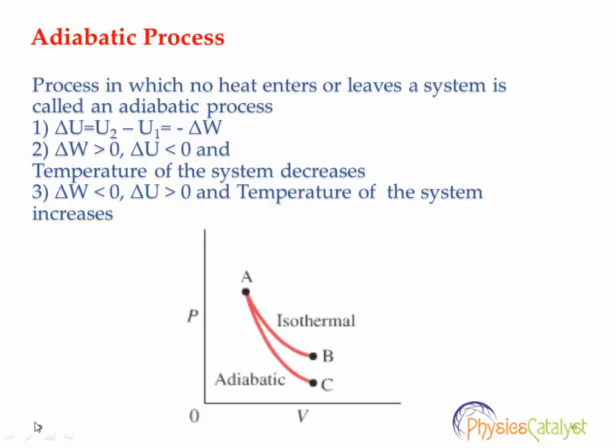Now, if delta W is greater than zero, delta U would be less than zero. That is, if work is done by a system, the internal energy of the system would decrease and the temperature of the system would decrease. The graph of PV for the adiabatic process is shown below.